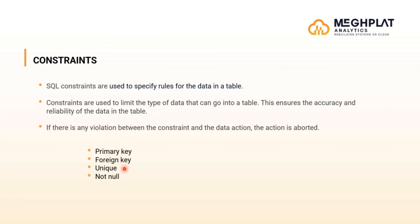These are the types of constraints in SQL we can see. The first one is primary key. The second one is foreign key. The third one is unique. And there is another one — not null.